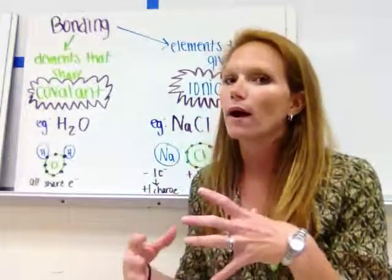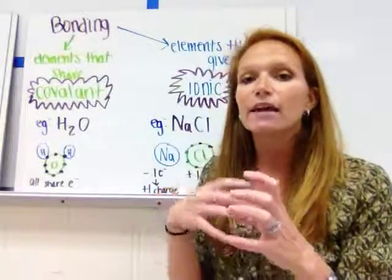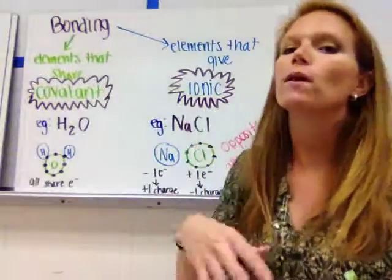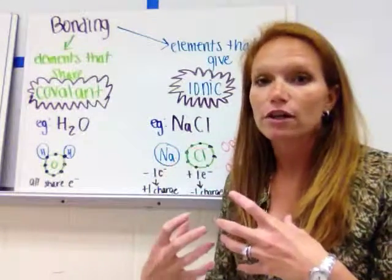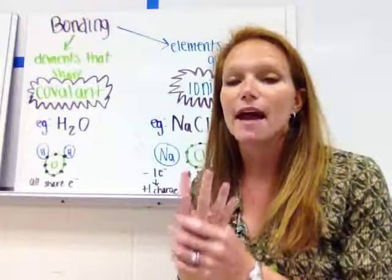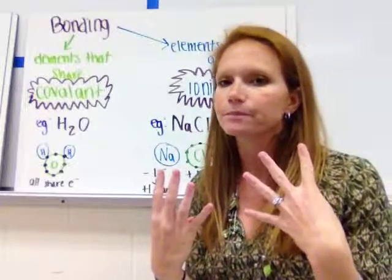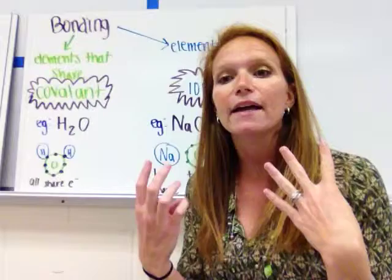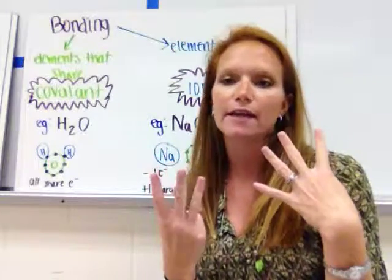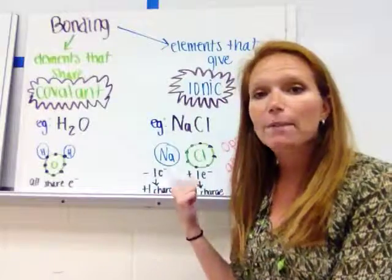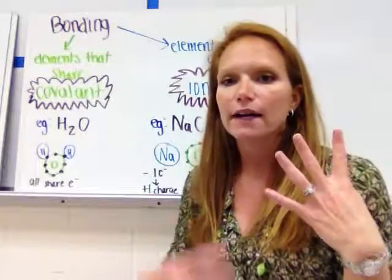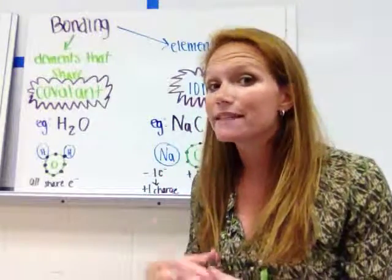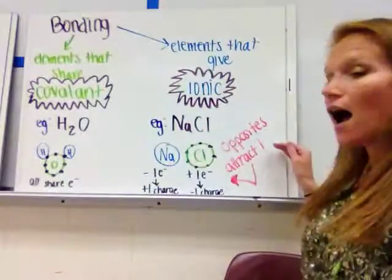The other type is an ionic bond, where elements actually gain or give up electrons. When they do that, they become charged. For example, if you have four negatives and four positives you're evenly charged, but if you give up a negative you now have more positives than negatives and become positively charged. Or if you gain a negative, you become negatively charged.